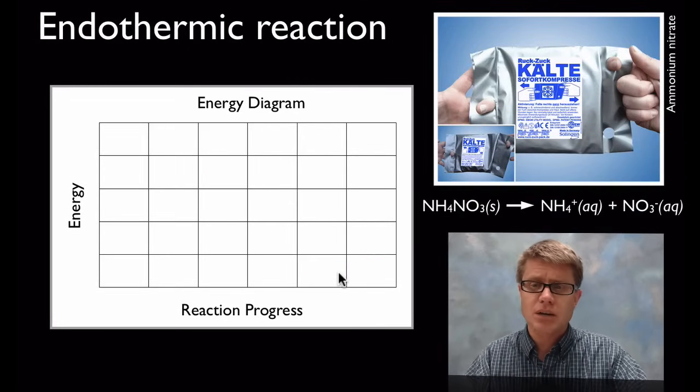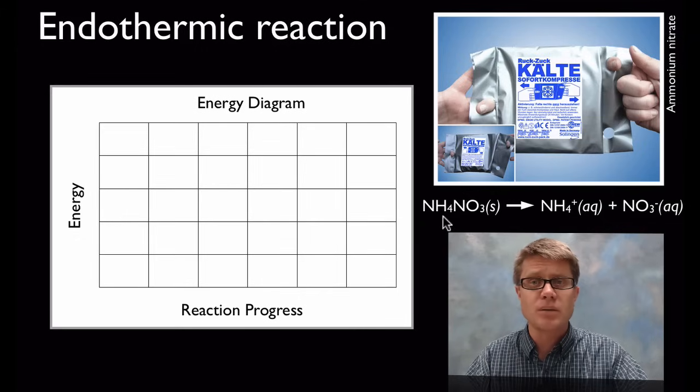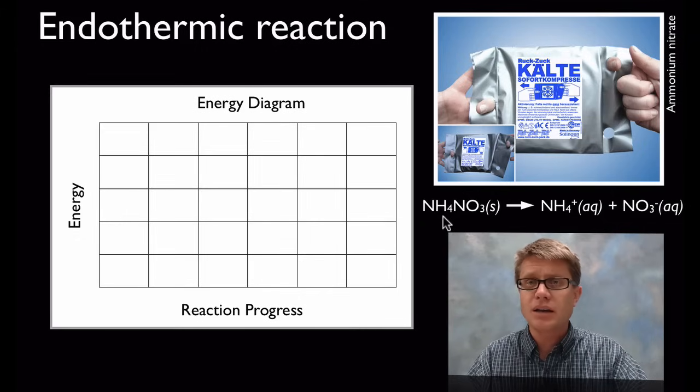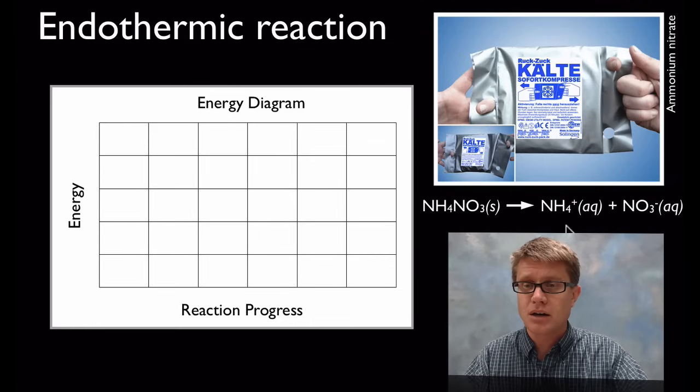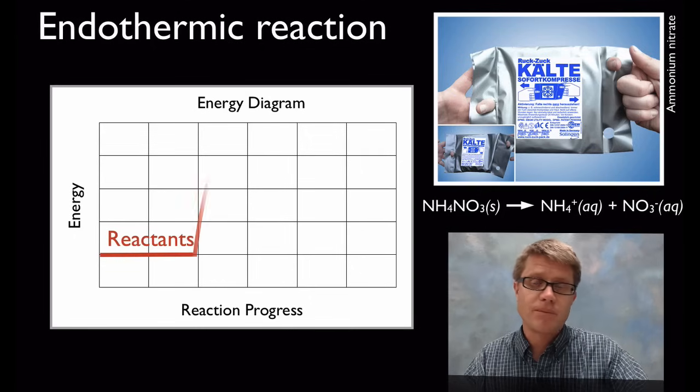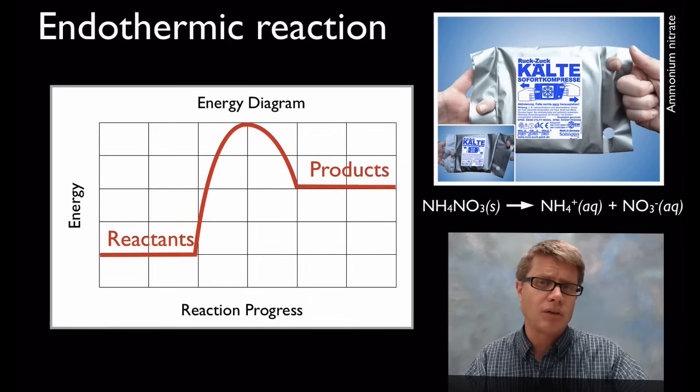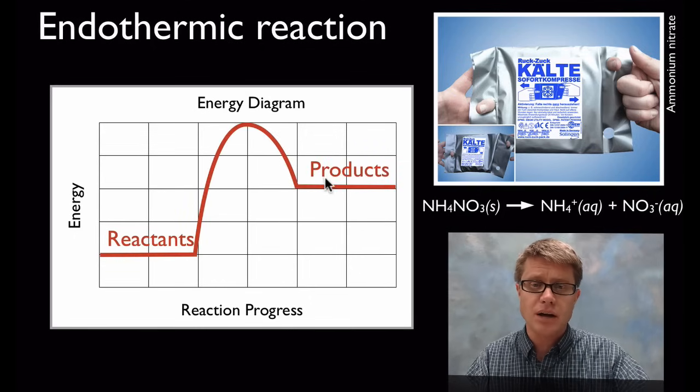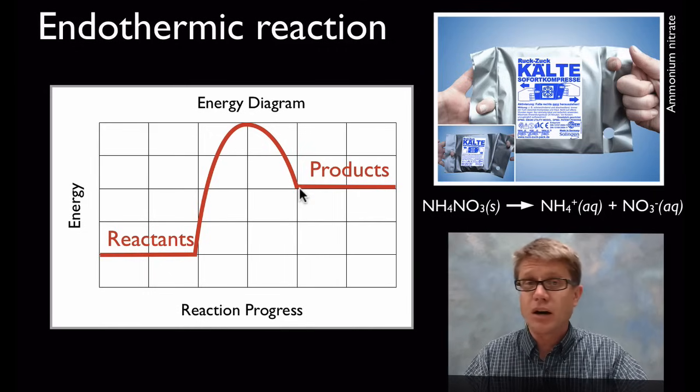Now if we look at an endothermic reaction, again this would be like solid ammonium nitrate and we're just combining it with water. So we're going to make ammonium and nitrate ions. In that case what we're doing is the reactants are actually going to have a lower amount of energy than the products. And so you can see here is our activation energy. But this is an uphill reaction.